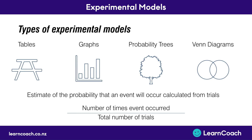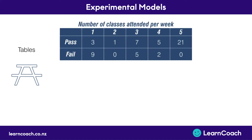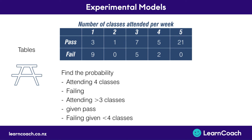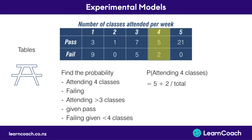This table shows the number of classes attended per week and how many of those students passed or failed the paper. We'll start by finding these four probabilities. The probability of attending four classes — we look at our table and we can see that there's 5 plus 2, which is our number of times an event occurs, divided by the total: 7 divided by 53, which equals 0.32.